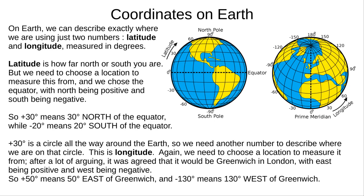We'll start with locations on the Earth. You've probably come across latitude and longitude before — two numbers that define any location on Earth's surface. Latitude is how far north or south you are. We need a starting point, and the obvious choice is the equator. North of the equator is positive, for example plus 30 degrees, while south is negative, for example minus 20 degrees. Zero degrees means exactly on the equator.